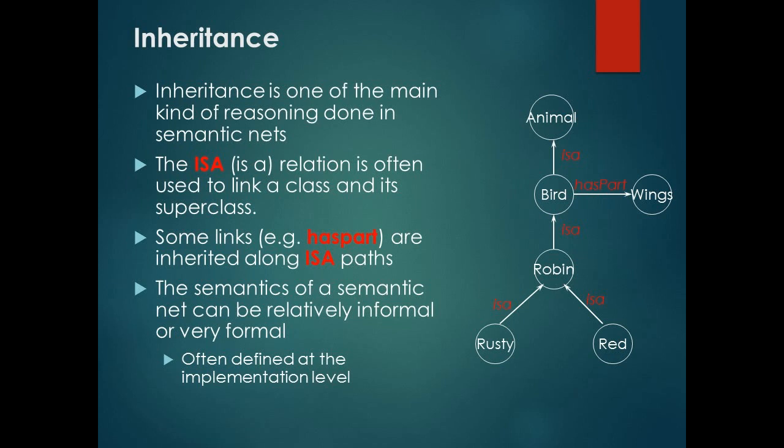The semantics of a semantic net can be relatively informal or very formal, often defined at the implementation level. An example for inheritance is: Robin is rusty and red. Robin is a bird. Bird has part wings. Bird ISA animal.